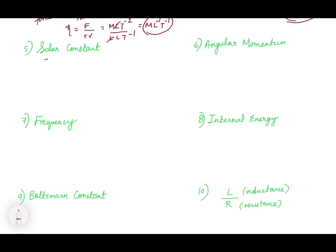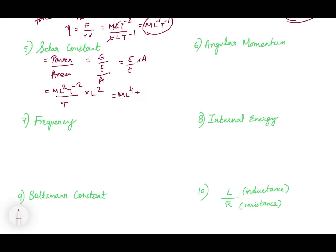Let's go to solar constant — this is going to be very interesting. You just need to know the formula: solar constant is power by area. Power is energy by time, again by area. So it becomes energy divided by time into area. The dimension for energy is ML²T⁻², divided by time and area L². This becomes MT⁻³. This is the dimension for solar constant.